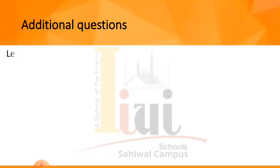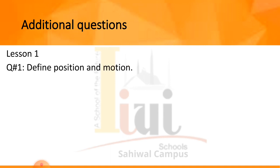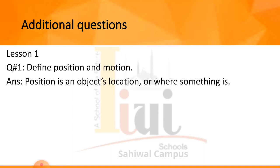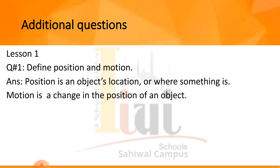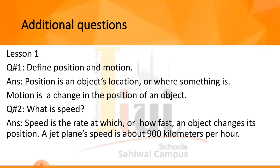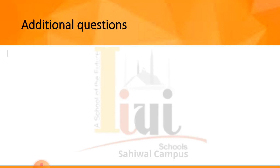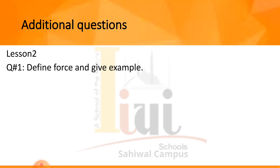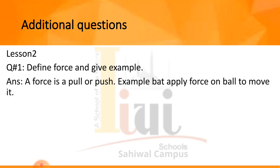Additional questions — Lesson 1: Question 1 — define position and motion. Position is an object's location, or where something is. Motion is a change in the position of an object. Question 2 — what is speed? Speed is the rate at which, or how fast, an object changes its position. For example, a jet plane's speed is about 900 km per hour. Lesson 2 — Question 1: define force and give an example. A force is a push or pull; for example, a bat applies force on a ball to move it.